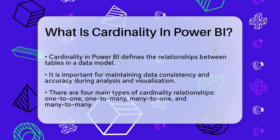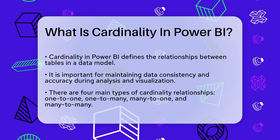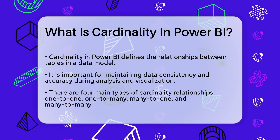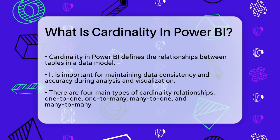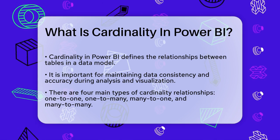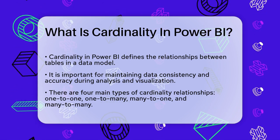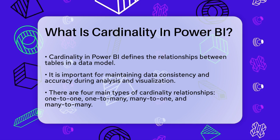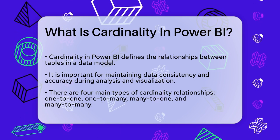Imagine you have two tables — one for products and another for sales. Cardinality determines how these tables connect. There are four main types of cardinality relationships: one-to-one, one-to-many, many-to-one, and many-to-many.